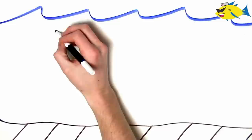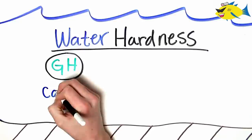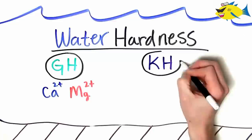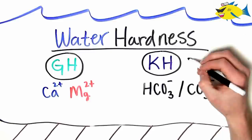We can break this topic into two main categories. GH, or general hardness, refers to a solution's relative concentration of calcium and magnesium ions. KH, or carbonate hardness, is a measure of the free bicarbonate and carbonate anions, also referred to as a measure of alkalinity.